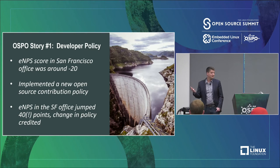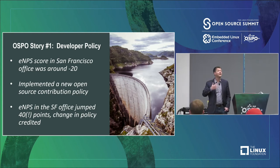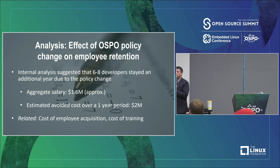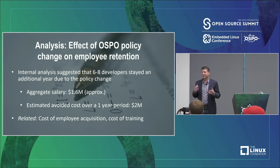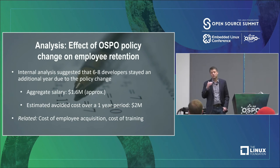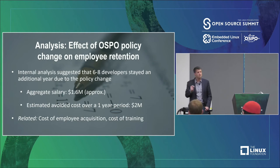We estimated that this caused maybe six to eight people to stay at least an additional year because they felt like they could develop their careers better at Rackspace. Six to eight developers — if you look at studies on the cost of losing somebody, finding someone new, and retraining them, it ends up for technical workers being on the order of 100 to 150% of their salary. Their aggregate salary was about $1.6 million. We avoided an estimated cost of finding and retraining of about $2 million over that year due to that one change. This is also related to your cost of employee acquisition and training — major drivers that your HR people are 100% following, and that you can have a major effect on as an OSPO.